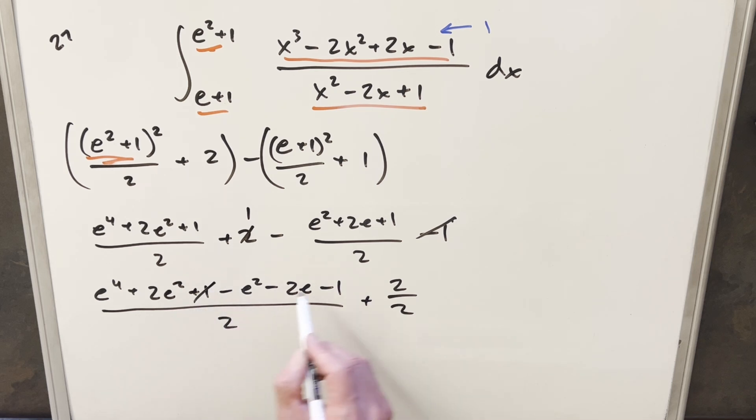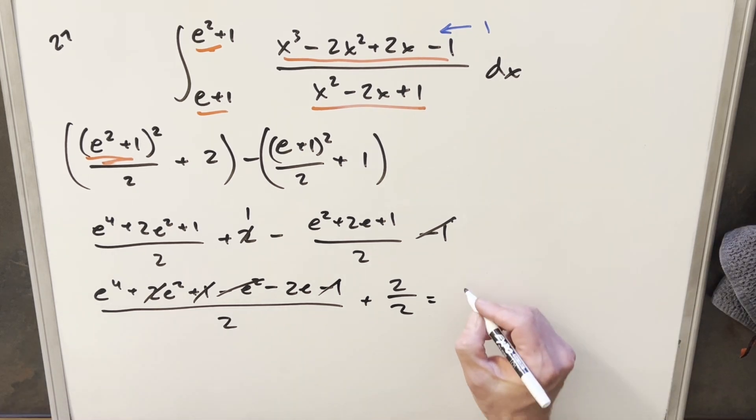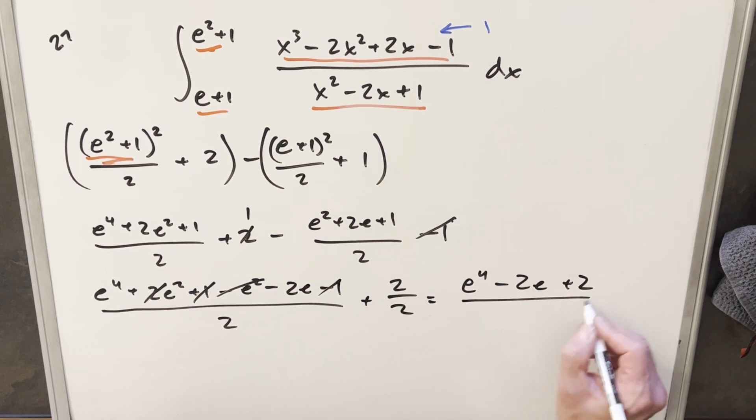Now, 1 minus 1, that's a 0 there. 2 e squared minus e squared gives me 1 e squared. So putting this together for my final solution, we just get e to the fourth minus 2 e plus 2 all over 2, and that's it.